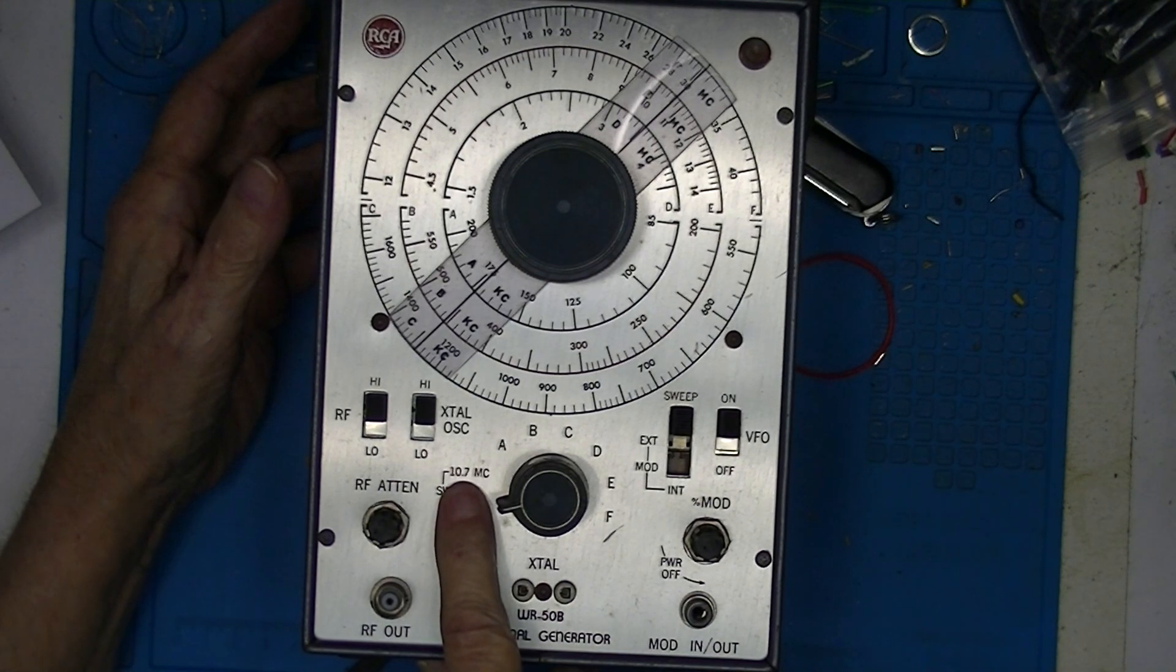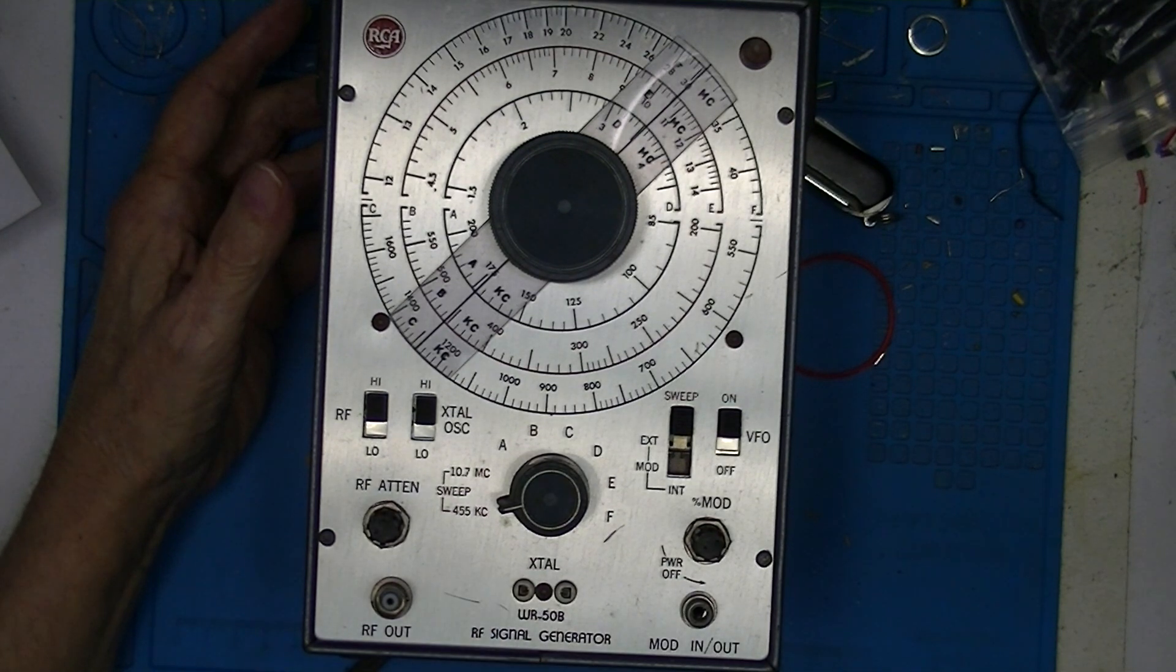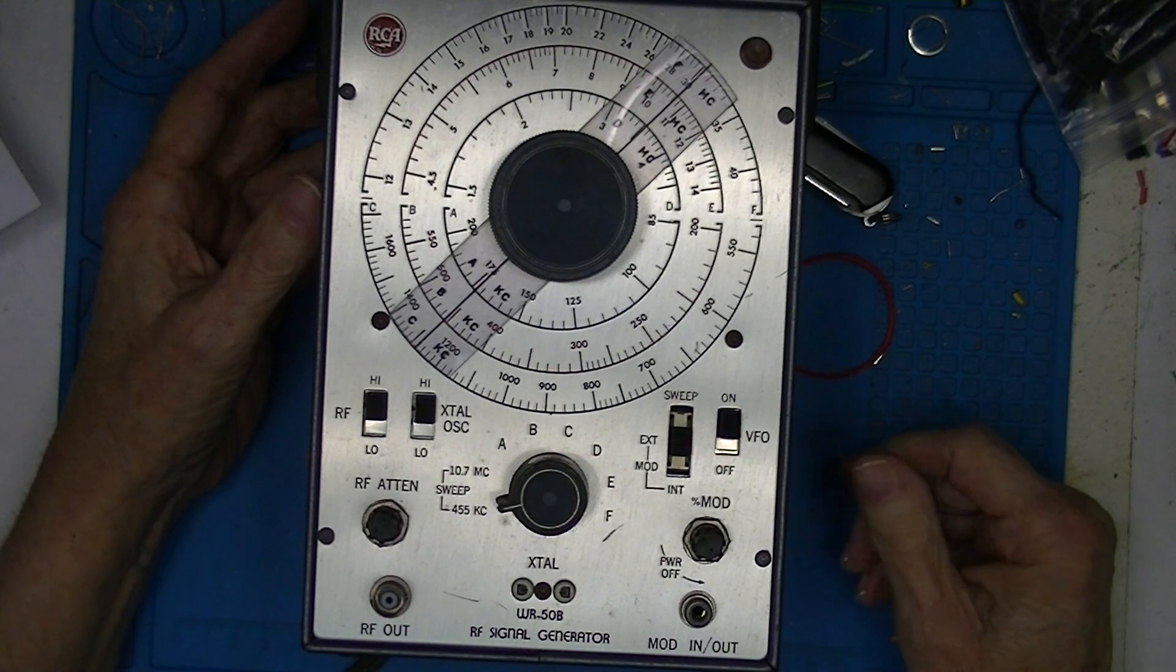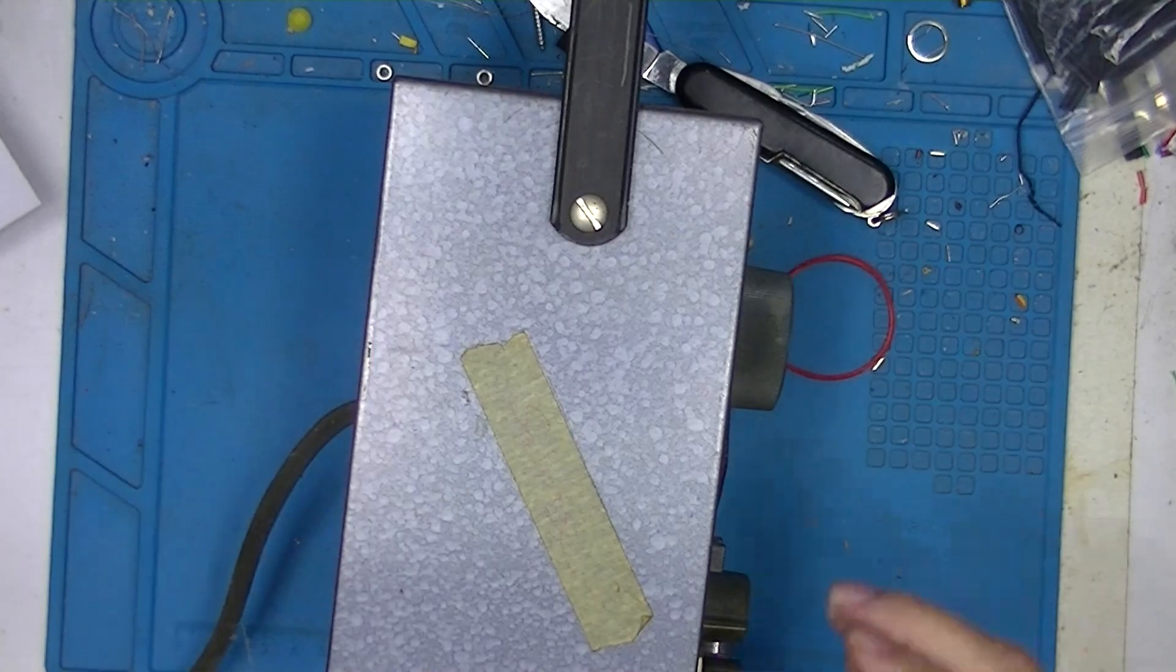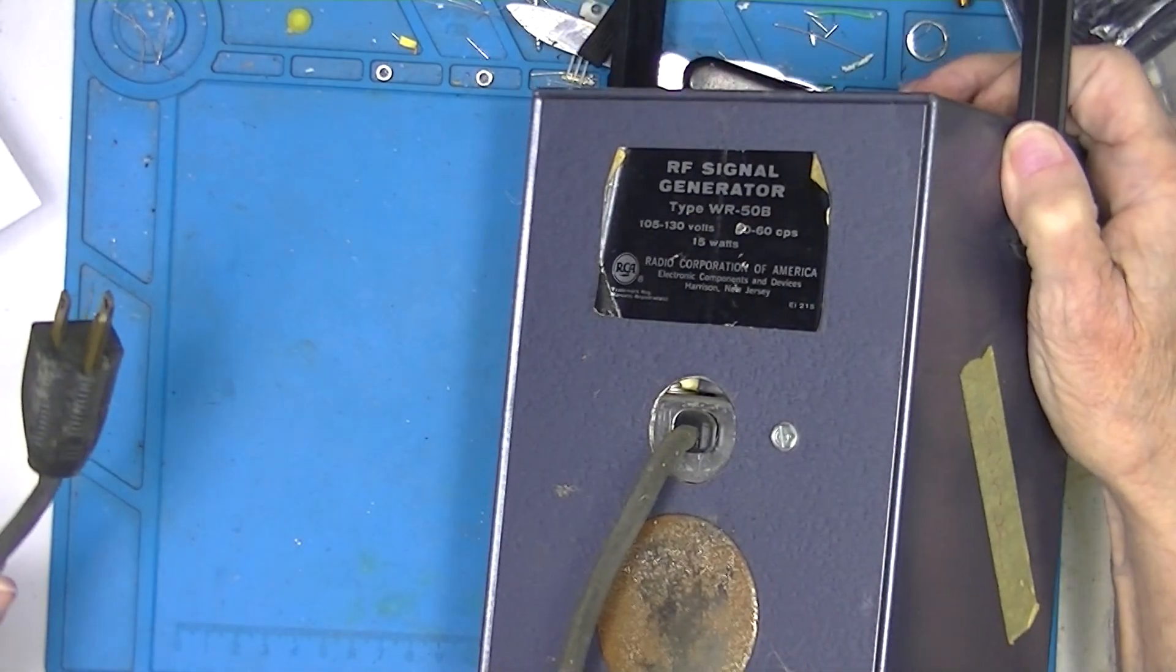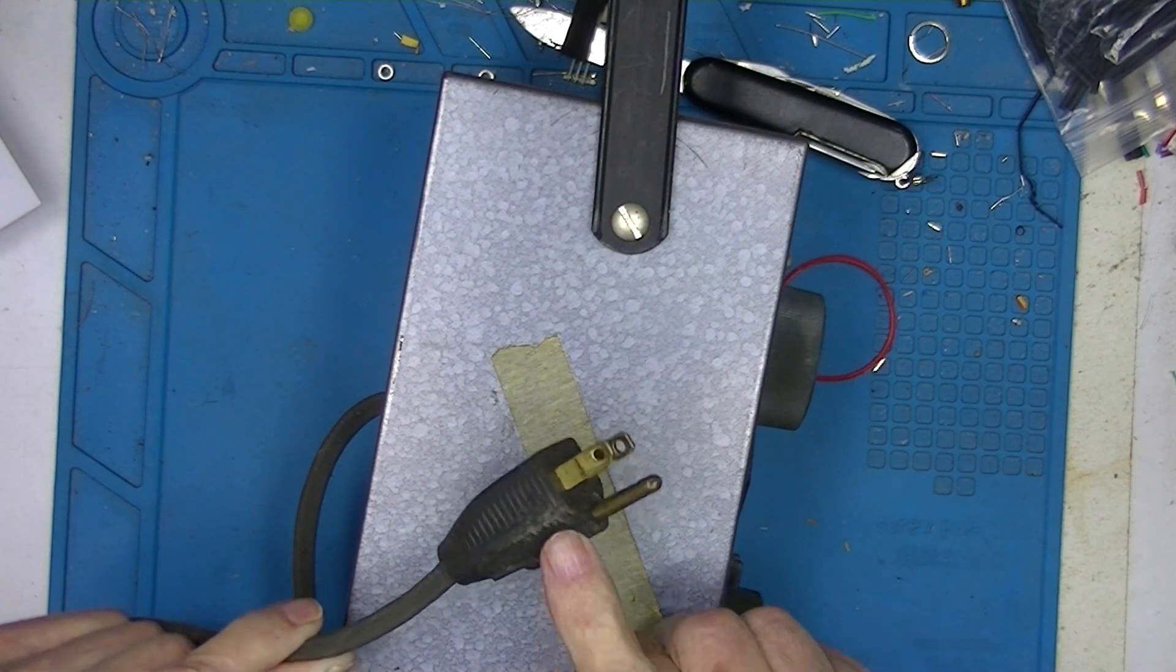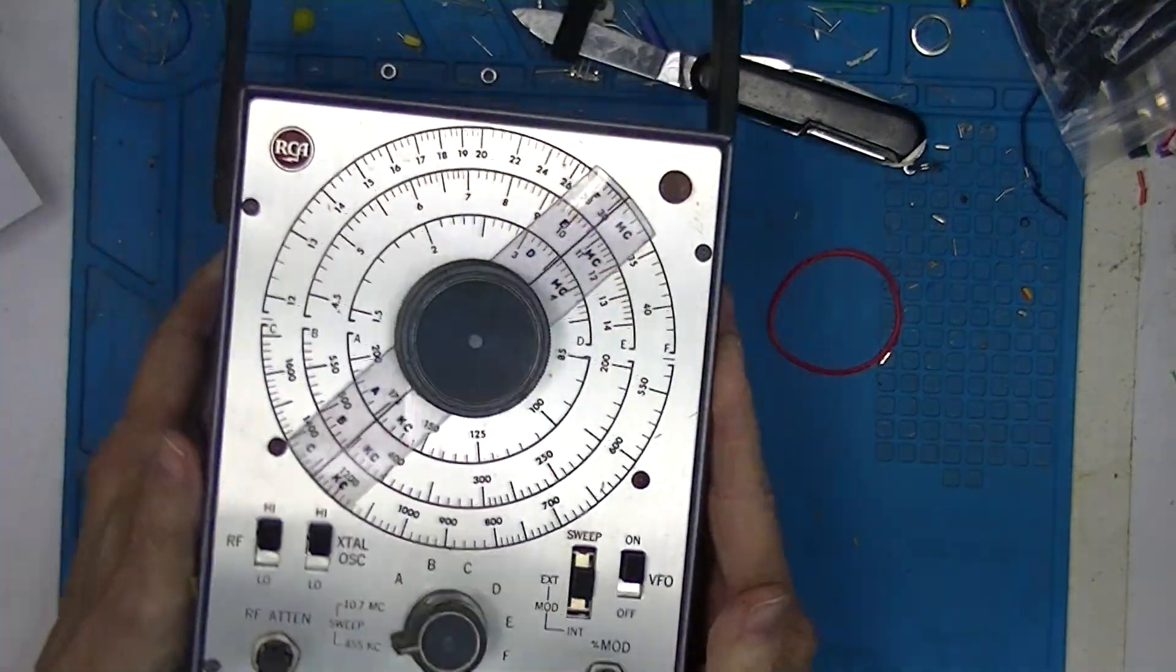These were popular and still are popular intermediate frequencies for AM and FM radios. The sweep allows us to look at the bandwidth of the intermediate frequency amplifier stages. This particular one has a three wire line cord which I believe to be original, but according to the schematic a lot of them had just two wire line cords.